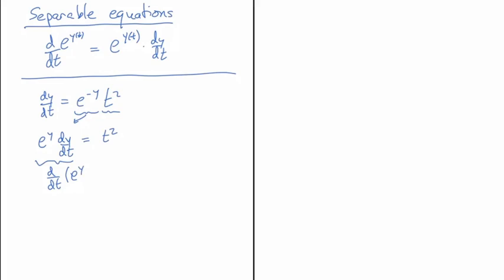The expression e to the y times dy/dt is the derivative of e to the y of t — going backwards through the chain rule. That equals t squared. Now I take an antiderivative with respect to t: the time derivative disappears on the left, and on the right I get one-third t cubed plus an arbitrary constant c.